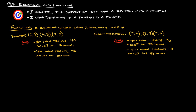A function is a relation where each X has only one Y. For example, the set of points (2,3), (4,5), and (0,3) is a function because every X has only one Y. There is one Y that has two different X's, but that's okay.